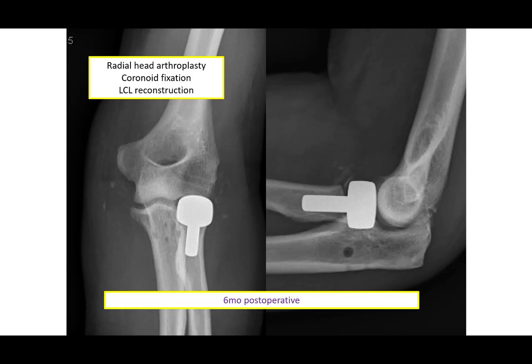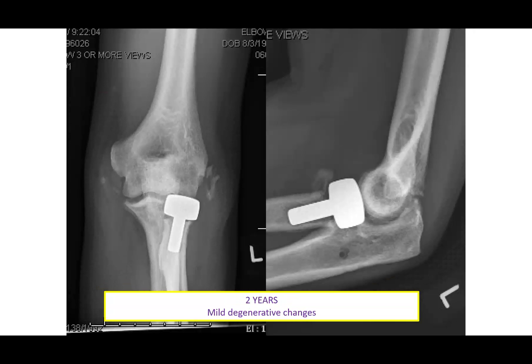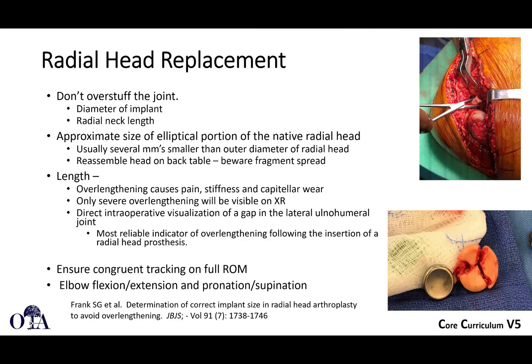You are doing this to provide stability, not necessarily replacing a joint so that it can bear weight. In this case, there's also a lateral collateral ligament reconstruction. At two years, there are some mild degenerative changes noted, but the elbow is reduced. Some technical pearls follow.